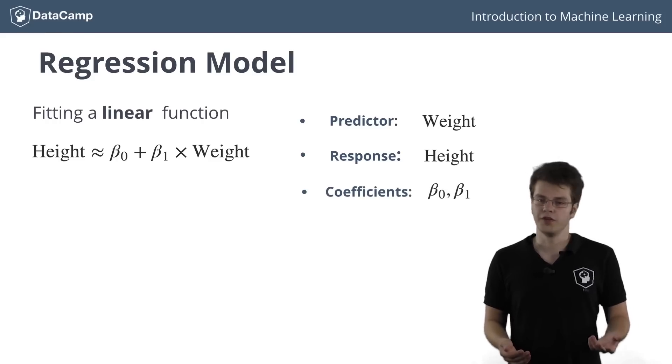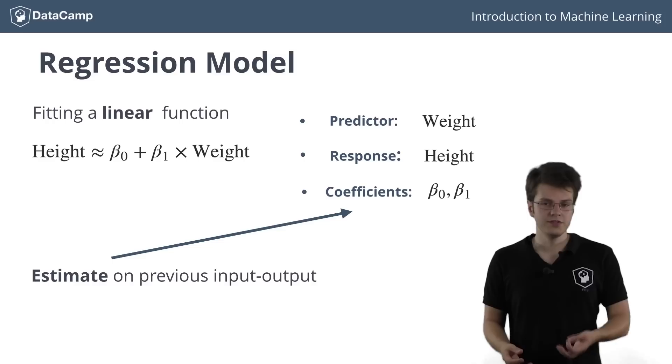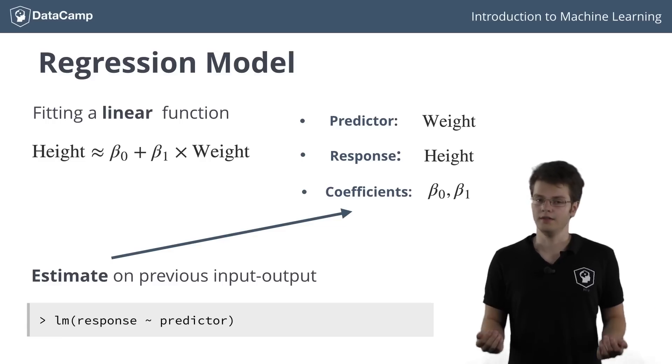As soon as you know the coefficients beta0 and beta1, the function is able to convert any new input to output. This means that solving your machine learning problem is actually finding good values for beta0 and beta1. These are estimated based on previous input to output observations. I will not go into detail on how to compute these coefficients. The function lm does this for you in R.